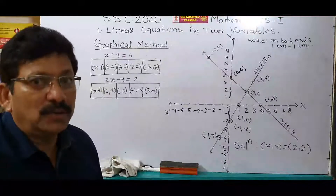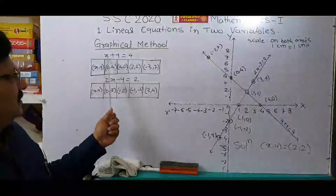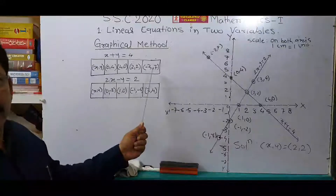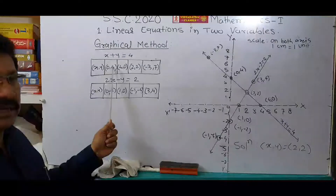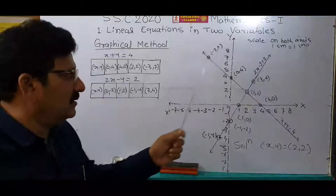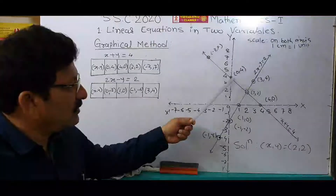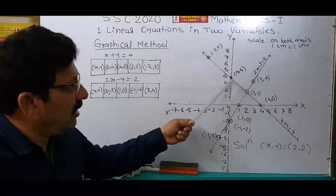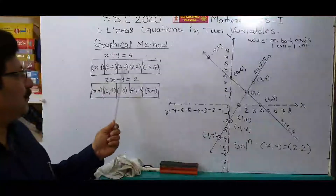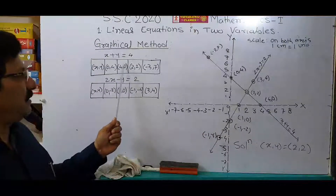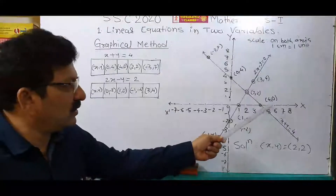Now we'll learn how to plot these ordered pairs on the graph paper. For the first equation, these are the 4 ordered pairs. Plot (0, 4): x is 0 and y is 4, so that point is on the y-axis. Then the next point is (4, 0): x is 4 and y is 0, so it is on the x-axis. See, this is the point — (4, 0), I have written it here.